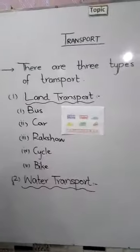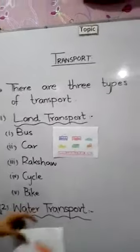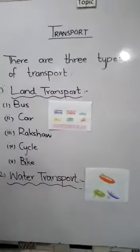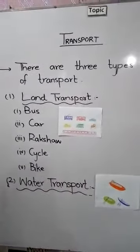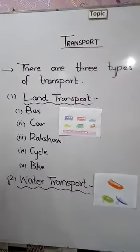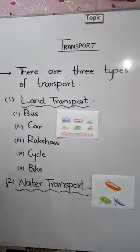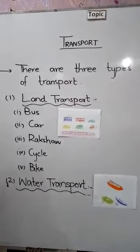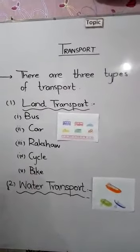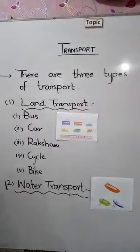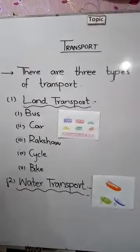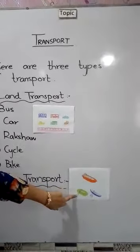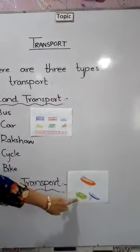In water transport we use boats, ships, cruises and submarines to travel in water. These vehicles either run on petrol, diesel or CNG, or small boats can float in water with the help of oars.